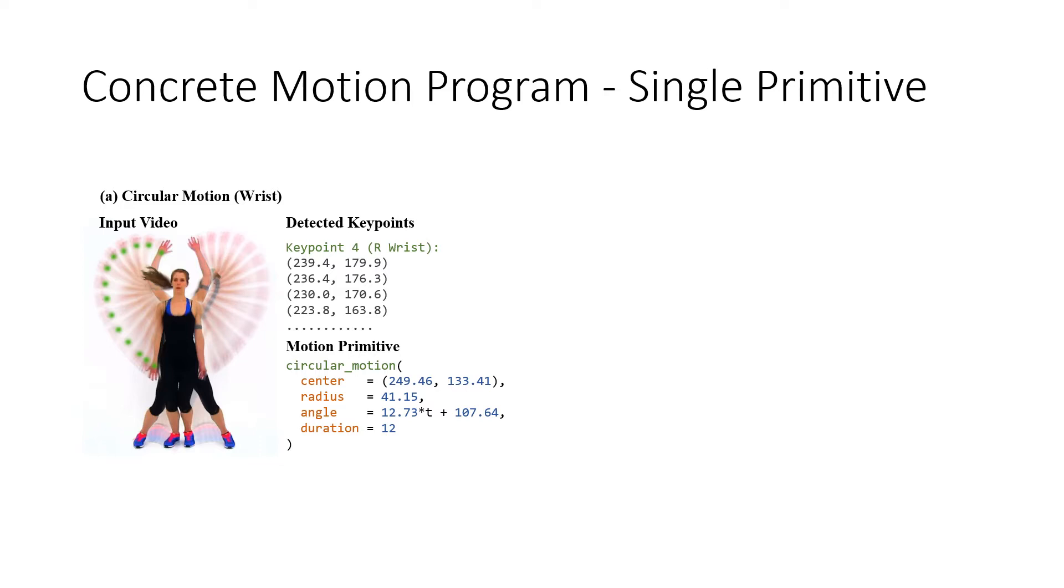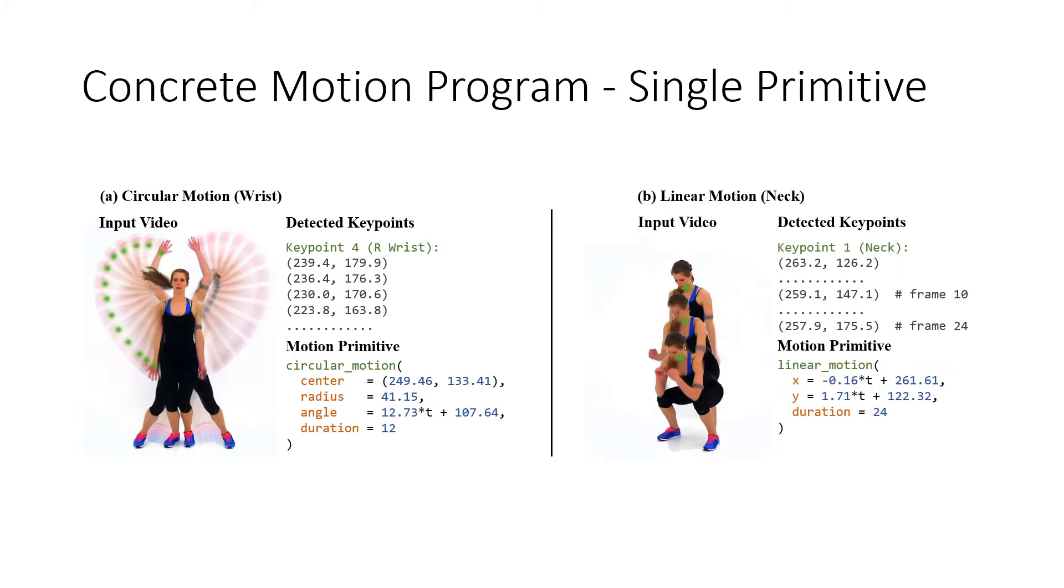Consider the right wrist keypoint in the jumping jacks motion. We can induce a best fit circle that approximates the input trajectory along with appropriate motion parameters such as angular velocity. Similarly, we can fit a linear primitive to the neck keypoint during a squat as shown on the right.